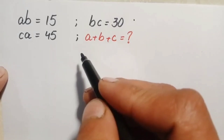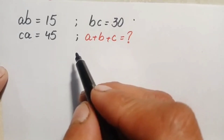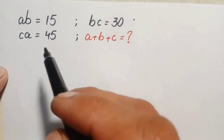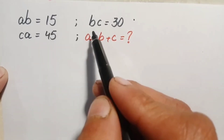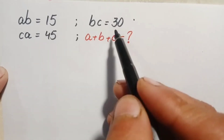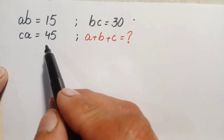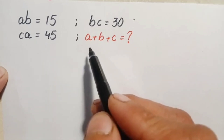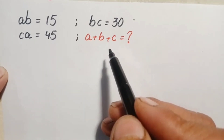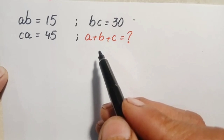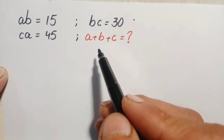Hello everyone, you are welcome to solve this beautiful algebra math problem: a times b is equal to 15, b times c is equal to 30, and c times a is equal to 45. Here we will try to find out the value of a plus b plus c by first finding the individual values of a, b, and c and then adding them up.